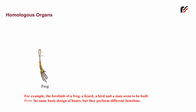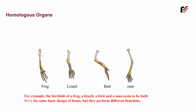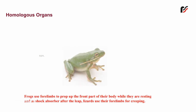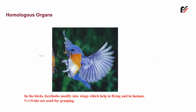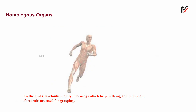For example, the forelimb of a frog, a lizard, a bird and a man seem to be built from the same basic design of bones but they perform different functions. Frogs use forelimbs to prop up the front part of their body while they are resting and as a shock absorber after the leap. Lizards use their forelimbs for creeping. In the birds, forelimbs modify into wings which help in flying, and in humans forelimbs are used for grasping.